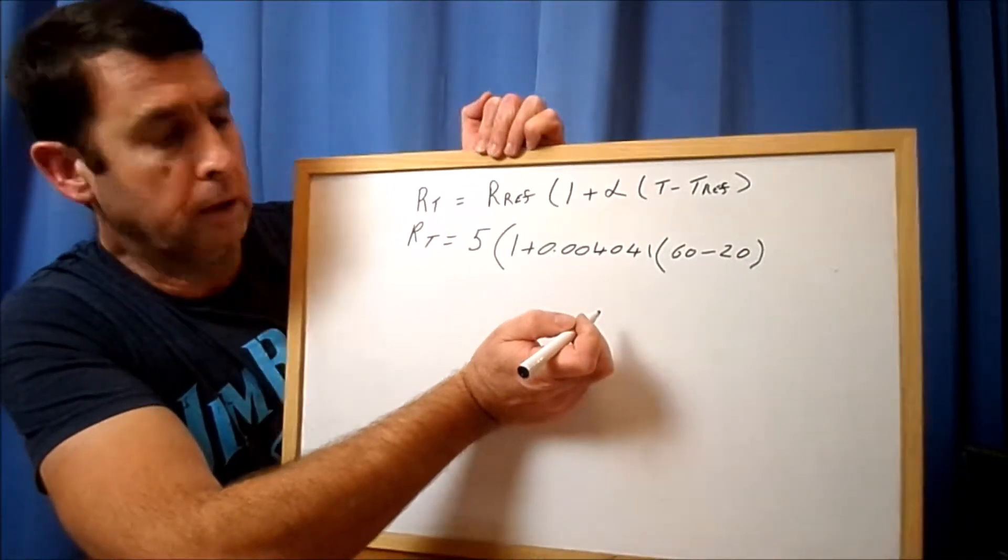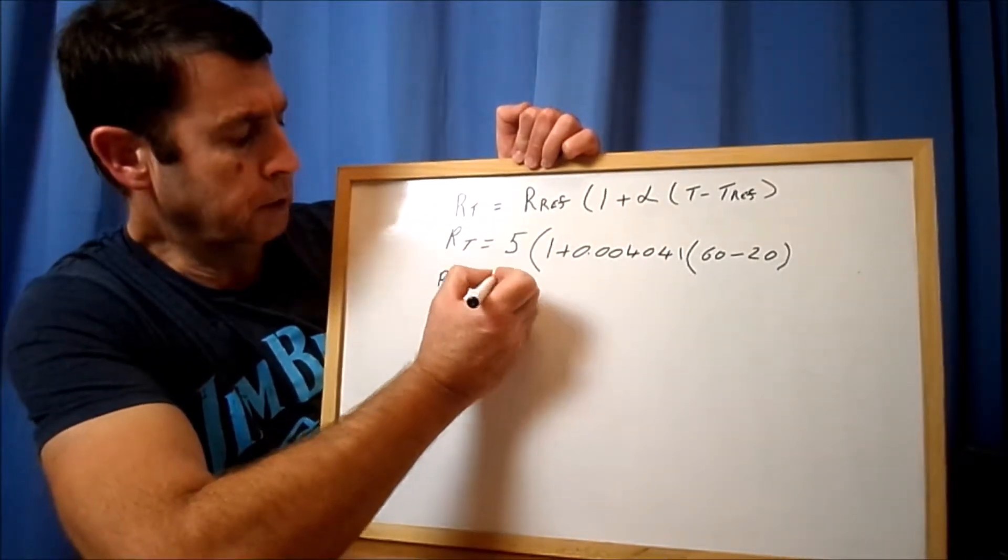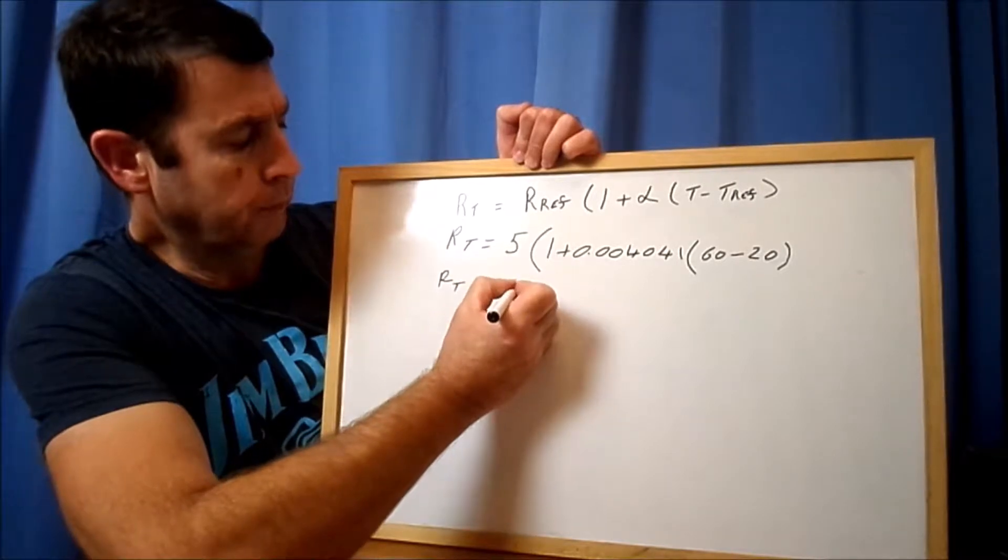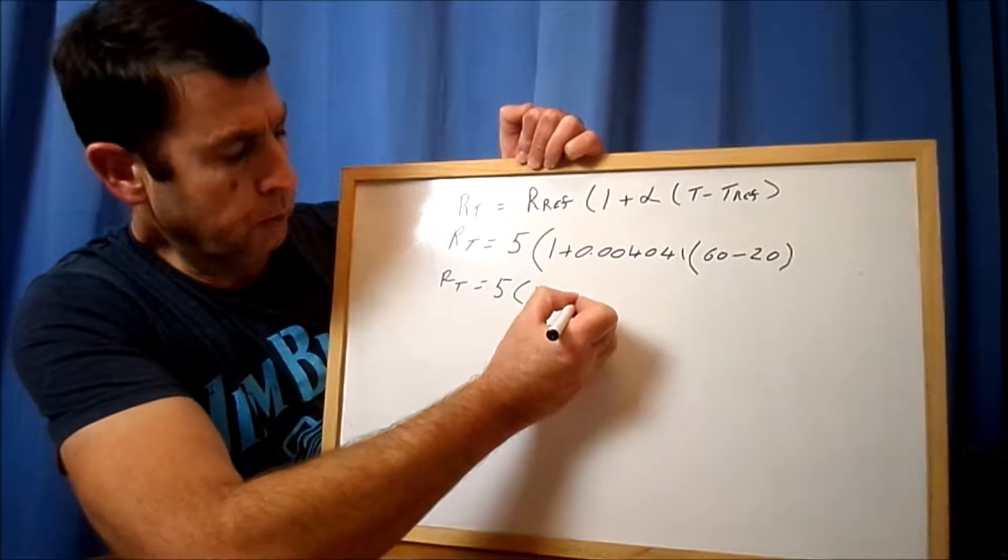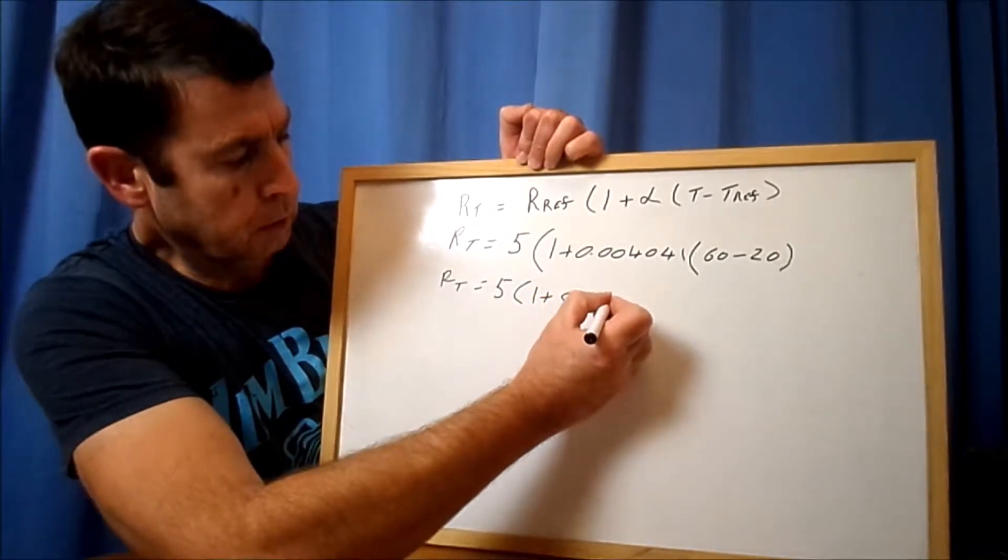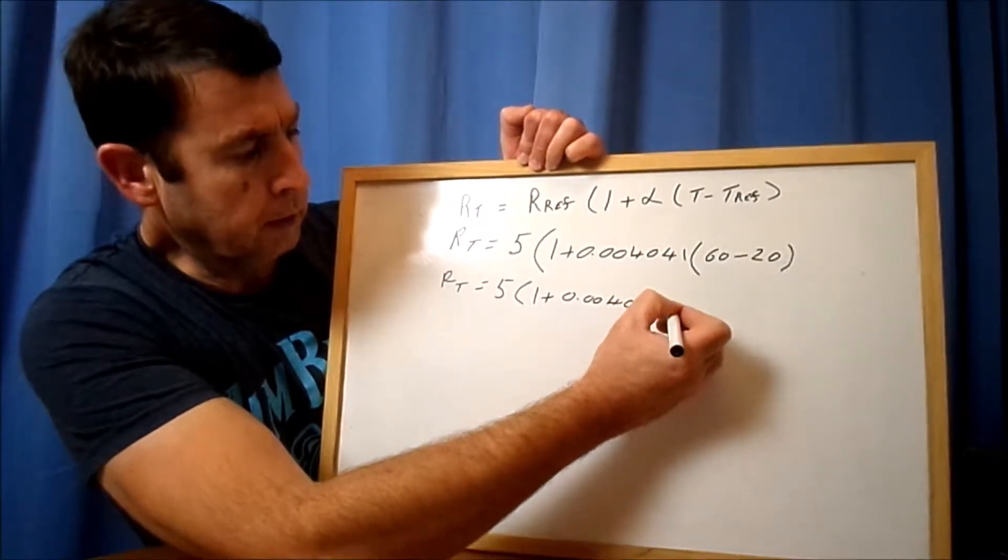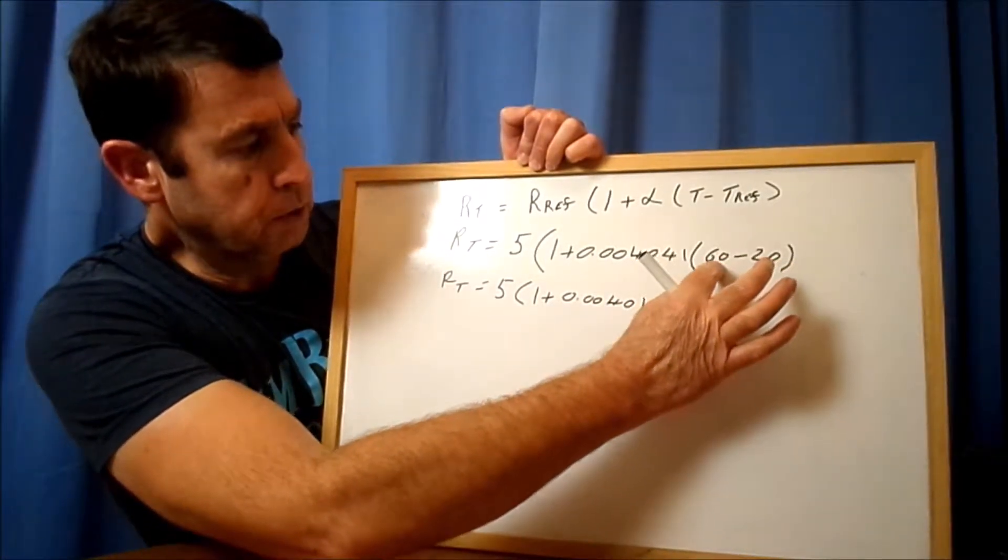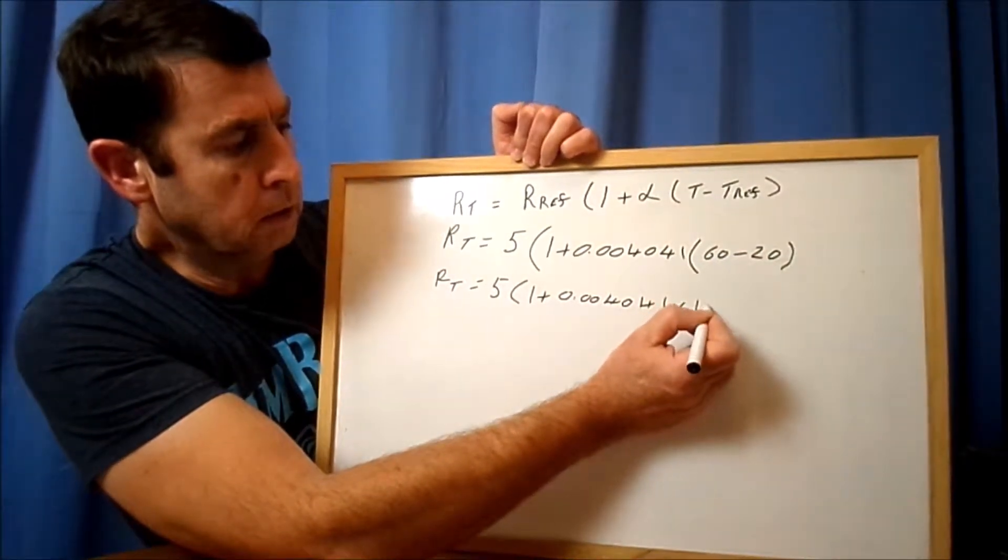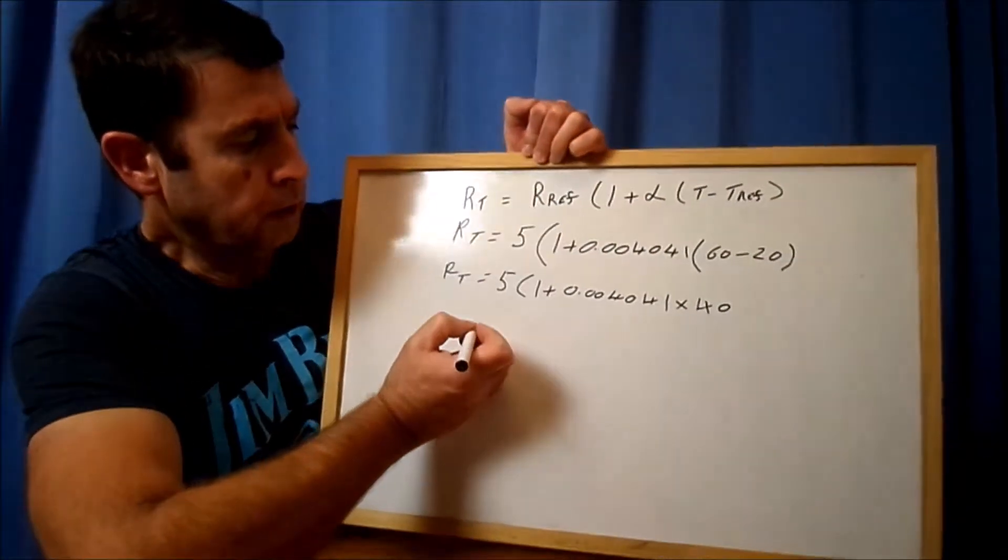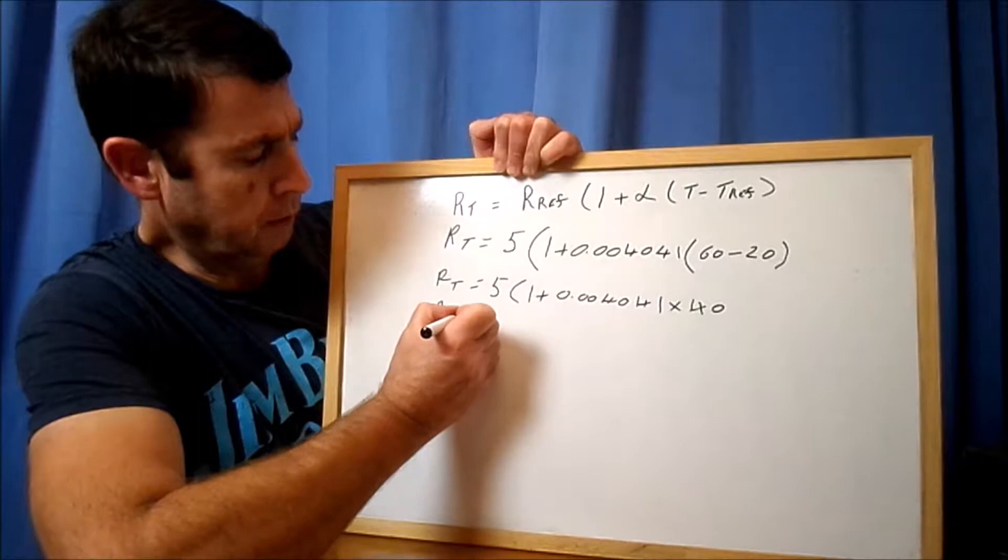Minus the temperature reference, and the temperature reference we said was 20 degrees. So now all we have to do is start breaking this down. We can say RT is equal to 5 times 1 plus 0.004041, and then that would be multiplied by 60 minus 20, which is 40.